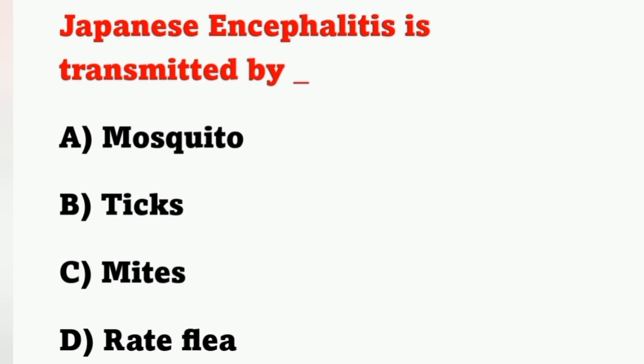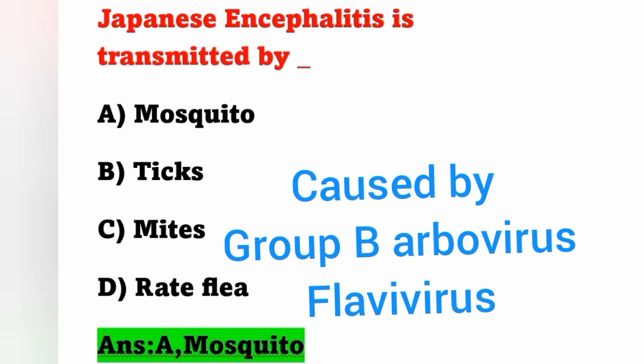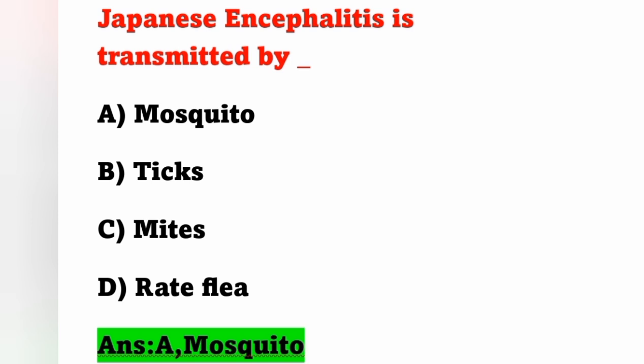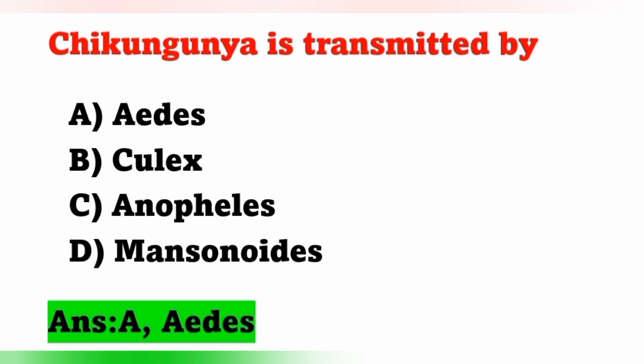Next question: Japanese encephalitis is transmitted by? Options: A) Mosquito, B) Ticks, C) Mites, D) Rat flea. Japanese encephalitis is a mosquito-borne disease caused by Group B arbovirus (flavivirus), transmitted by Culex species mosquito. Next question: Chikungunya is transmitted by? Options: A) Aedes mosquito, B) Culex mosquito, C) Anopheles mosquito, D) Mansonioides. Chikungunya is transmitted by Aedes mosquito — specifically Aedes aegypti and Aedes albopictus. Option A is correct.